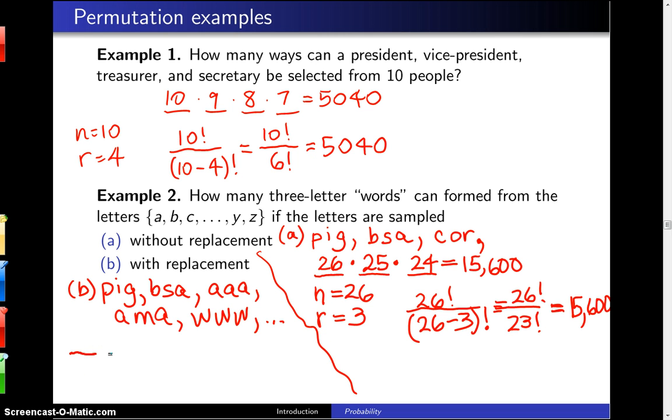Once again, we're going to start with the multiplication rule. There are 26 choices for the first letter, but since we're sampling with replacement, there are 26 choices for the second letter and 26 choices for the third letter. When you multiply that out, you get 17,576.